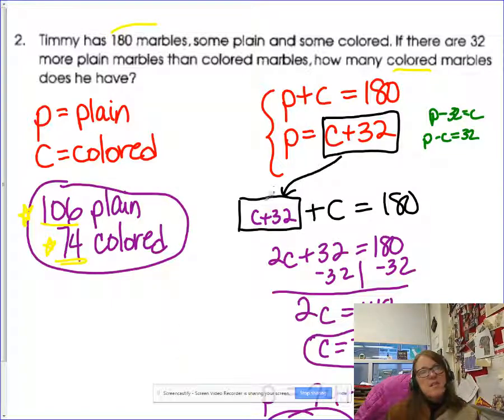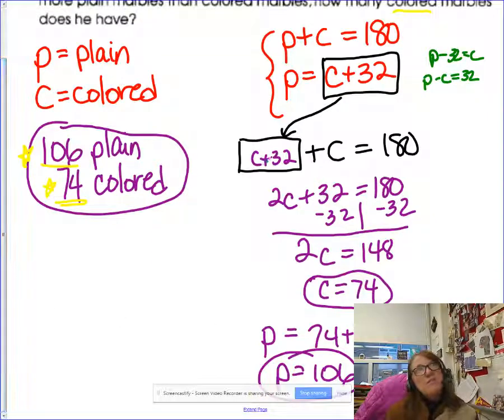Any of those work. This is the one I chose and then went through and substituted to get my two number values. 74 colored, 106 plain.